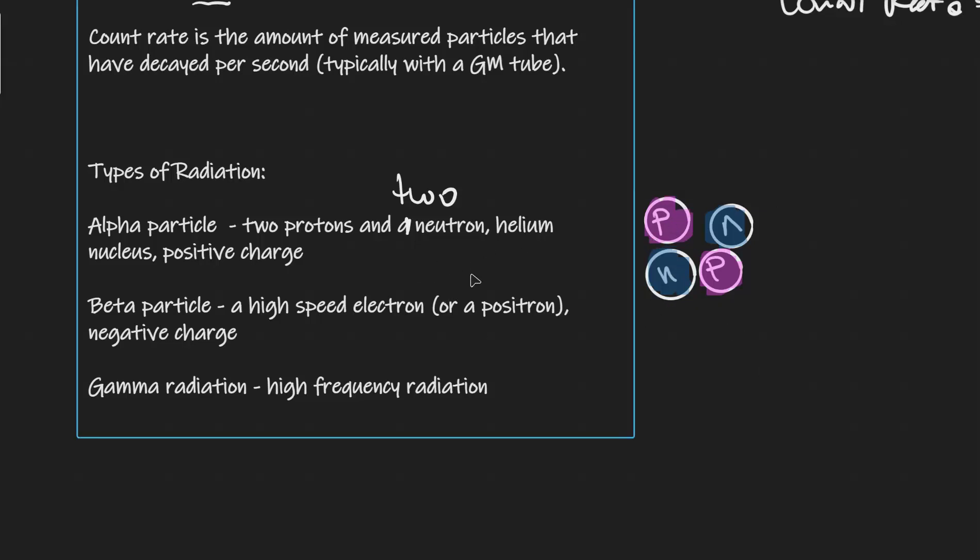This is essentially a helium nucleus and it has an overall positive charge because the neutrons are neutral and the two protons are positive. We can also have a beta particle depending on the type of decay, and this is typically a high speed electron.